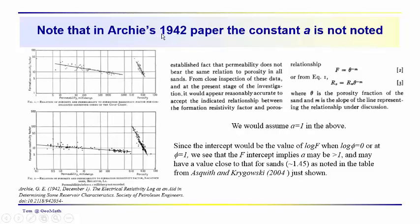So, Archie's 1942 paper doesn't even have the constant A. So, we might assume in this particular case that he assumes that the intercept is equal to 1. Now, the intercept would be the value of the log of F when log of phi is equal to 0. In other words, at x equal 0, what is the value of log of F? Or, in other words, at phi equal 1 or 100% porosity, log of 1 is equal to 0. So, our intercept would be on this log of F axis. A would be the intercept of this straight line.